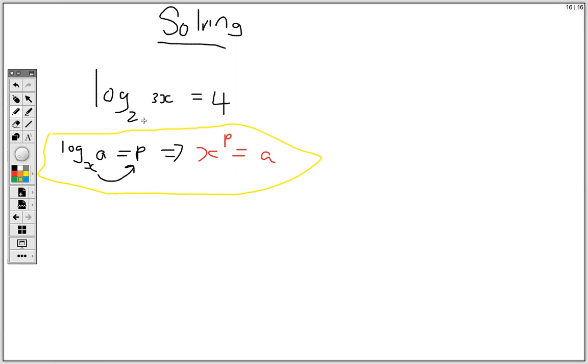So in this activity we can first rewrite this in exponential form. So it becomes 2 to the power 4 equals 3x. Now 2 to the 4, that's 16 equals 3x. We can always divide both sides by 3. So it means x equals 16 over 3.